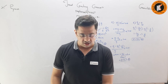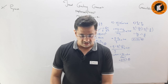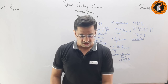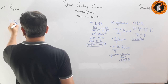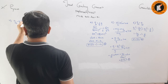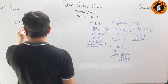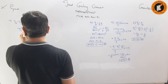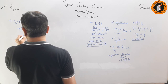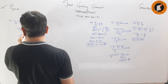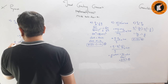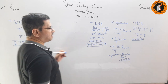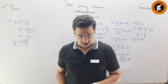Question number 7: Acceleration due to gravity is g on the surface of the earth. Find the value at a height 32 km above the surface. Using g_h = g·(1 - 2h/R) = g·(1 - 2×32/6400) = g·(1 - 1/100) = 0.99g. So g_h = 0.99g is the answer.